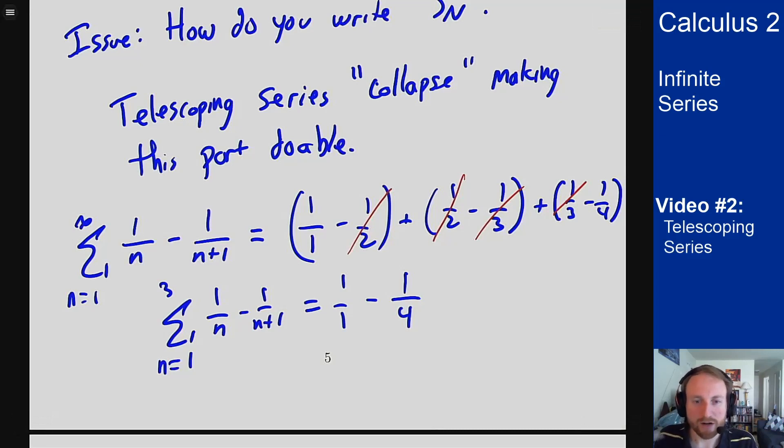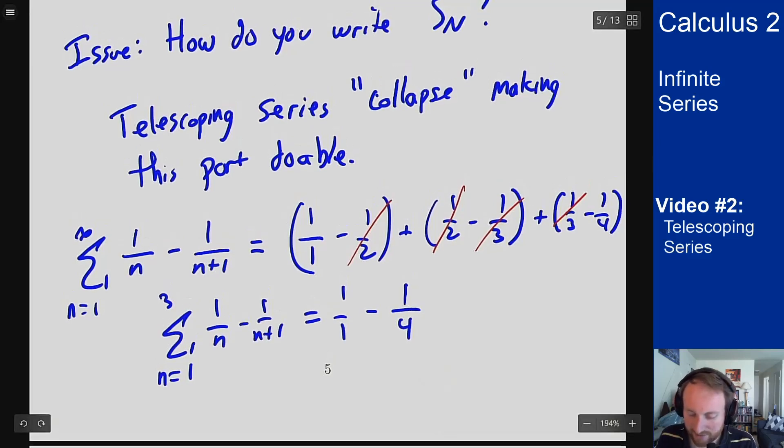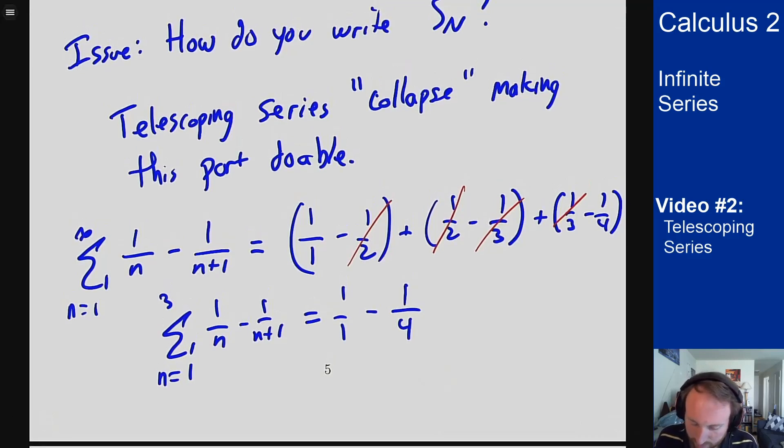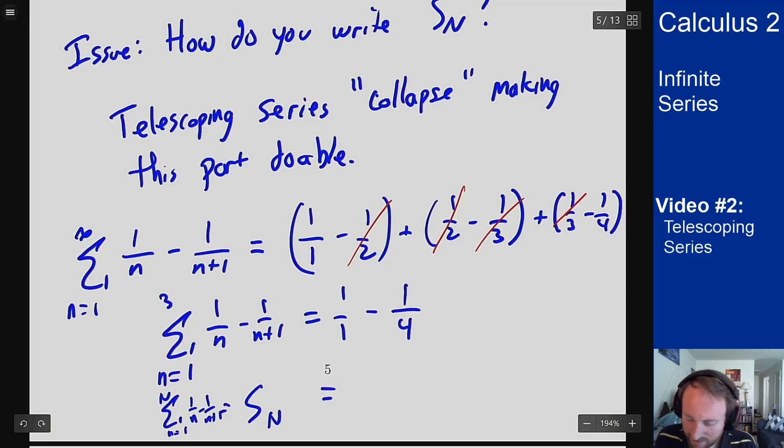And the point is, no matter how many terms I take, this is always going to be the case. So my partial sums S_N, which as a reminder will be sum n equals one up to capital N, one over n minus one over n plus one, is going to be one over one minus one over capital N plus one. And that's easy to take a limit of. That's where we're headed with these series. That's why they're nice, because I get a nice expression for S sub capital N in terms of capital N.